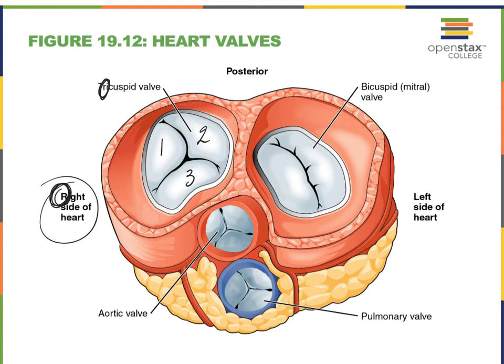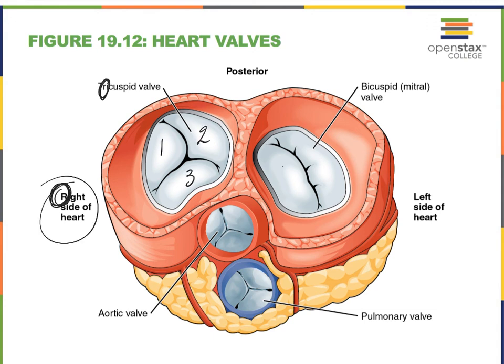The bicuspid valve is on the left side of the heart, and we see only two cusps — bi- meaning two — and it looks like the miter of a bishop. Your semilunar valves all have three cusps. They look very much alike, each cusp sort of resembling half a moon.